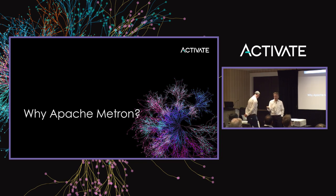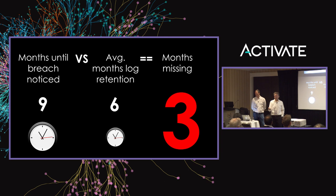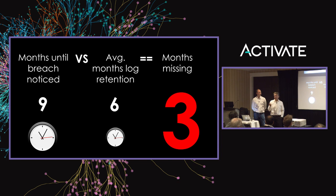Why use Apache Metron? There are a lot of security systems out there that provide some capability, but they're very lacking. Typically, the existing security systems rely on you having some form of the data, but they don't provide a good way to hold it long term. A breach can occur and it could be three months before you actually find out — and you generally don't find out through yourself, but through a third party, which can be very embarrassing. So you've got three months of missing data, and by the time you've researched to find the problem, another breach has occurred.